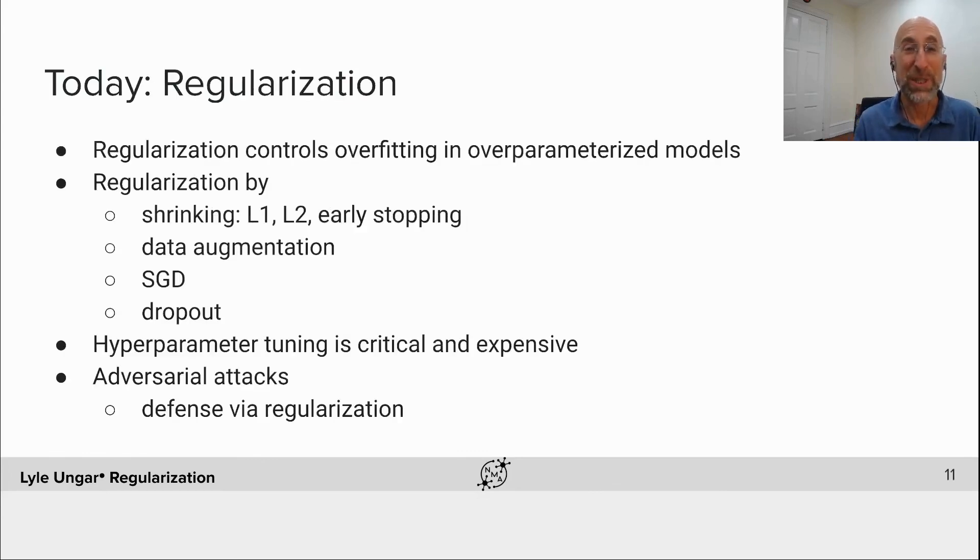So what is regularization? We'll see lots of ways of controlling overfitting. We'll see penalties like putting in an L1 or L2 penalty, sum of absolute values or sum of squares of weights. We'll see early stopping of training. We'll see data augmentation techniques. We'll see that stochastic gradient descent itself rather magically does regularization. We'll cover dropout. We'll see that all these things involve hyperparameters that have to be tuned. And then, for fun, at the end, we'll look at adversarial attacks and how to defend against them using regularization. This notion that people can tweak inputs very slightly and get different outputs than should have been there. This is a lot, but we do have a day to cover it. Let's get started.